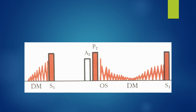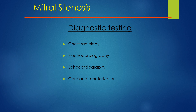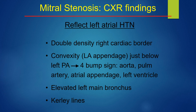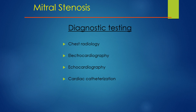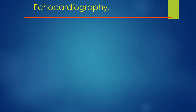Diagnostic testing includes chest radiography, electrocardiography, echocardiography, and cardiac catheterization. Chest radiography reflects left atrial hypertension: double density at the right cardiac border, convexity of the LA appendage just below the left PA, the four-bump sign (aorta, pulmonary artery, left atrial appendage, and left ventricle), elevated left main bronchus, and Kerley B lines.